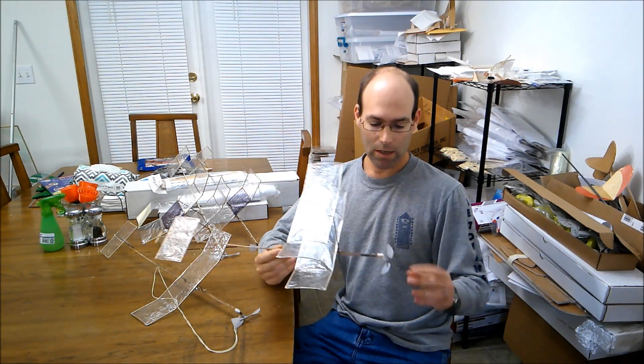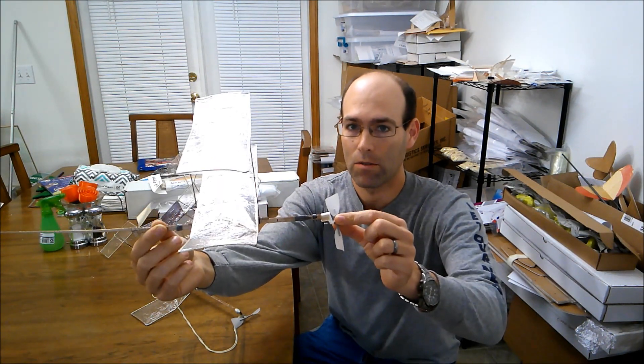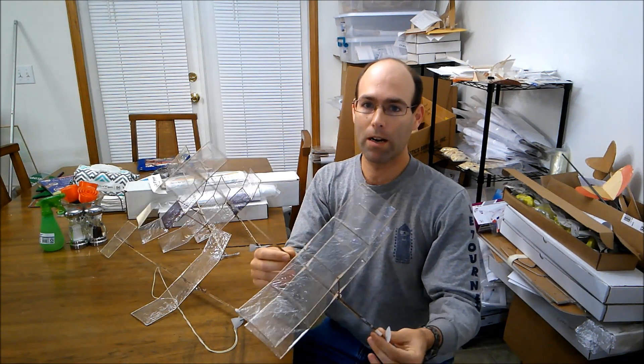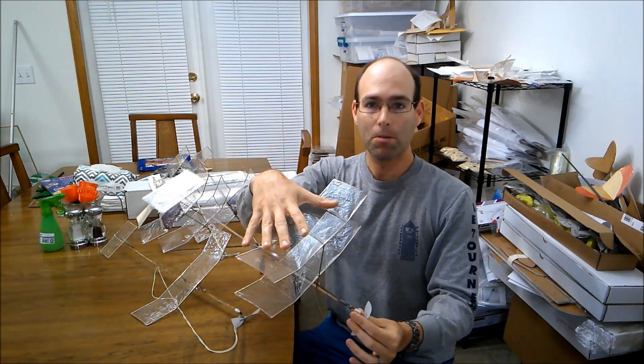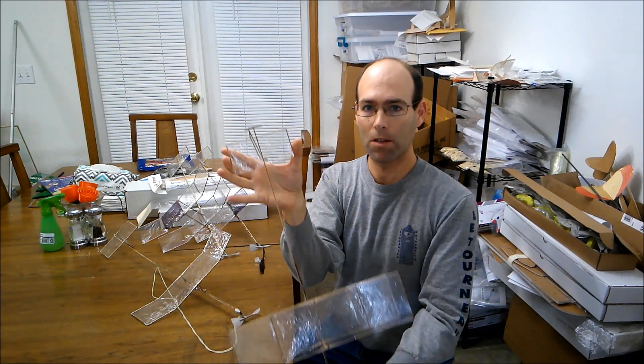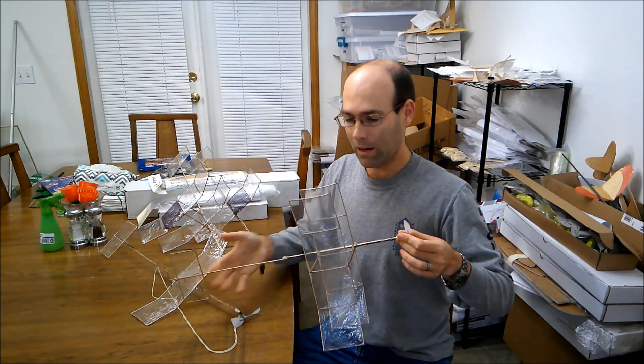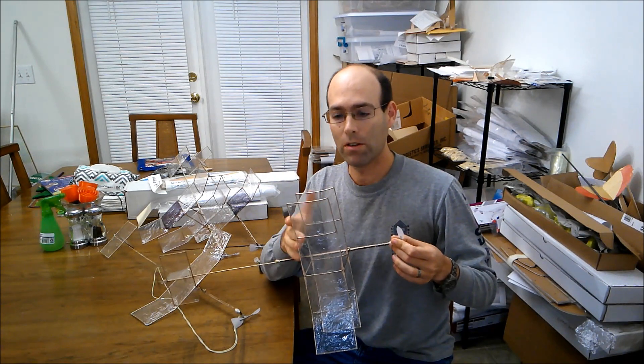So the rules set dictates a three and one-eighth inch propeller maximum diameter. You're allowed biplanes, decent size, not huge, and then the stabilizer is this tiny little thing. This is the maximum dimensions allowed for the stabilizer. And if you look at it relative to the wing, it is quite small, especially on a biplane.